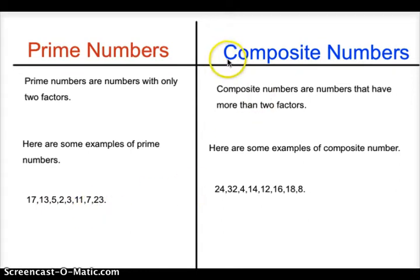Now, these are composite numbers. Composite numbers are numbers that have more than two factors. Here are some examples of composite numbers: 24, 32, 4, 14, 12, 16, 18, and 8 all are composite numbers because they have more than two factors.